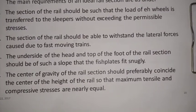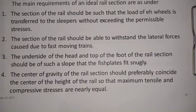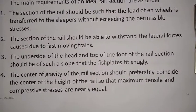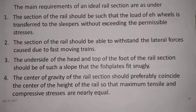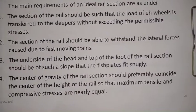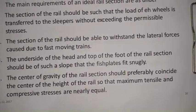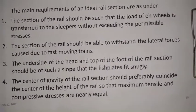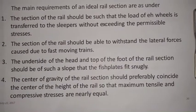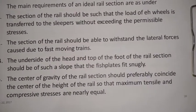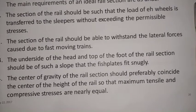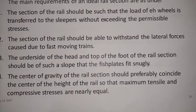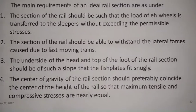The second point: the section of the rail should be able to withstand the lateral forces caused due to fast moving trains. Initially, the loads acting on the rail are vertical in direction, but because of fast moving trains — due to vibratory or dynamic forces acting on the rail — a lateral force develops. The rail should also be able to resist these lateral forces.